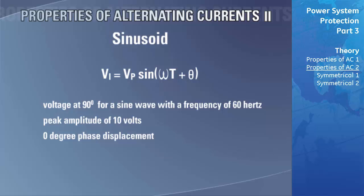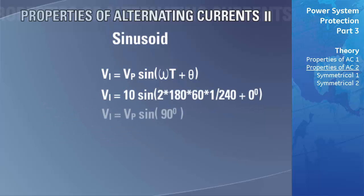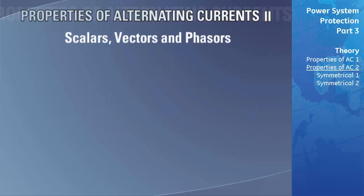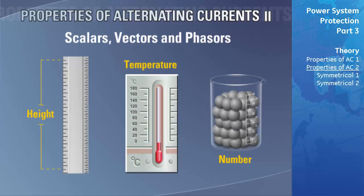As an example, let's calculate the voltage at 90 degrees for a sine wave with a frequency of 60 hertz, a peak amplitude of 10 volts, and a zero-degree phase displacement. The instantaneous voltage at 90 degrees is 10 volts. Many quantities can be described by magnitude alone — known as scalar quantities — while others such as force require both magnitude and direction, known as vectors.